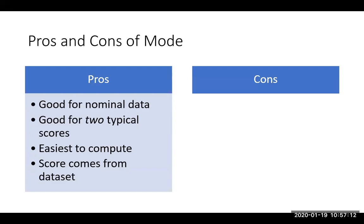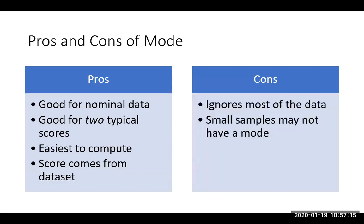Now the downsides of mode. It ends up ignoring all the rest of the data. In the brick-counting example, the person who saw 90-something bricks was completely ignored. That might be because they had double vision or misunderstood the task, but there might be a legitimate reason they saw that many. Statisticians don't like ignoring data — all data are interesting — so it's not ideal that the mode discards all but the most frequent value.